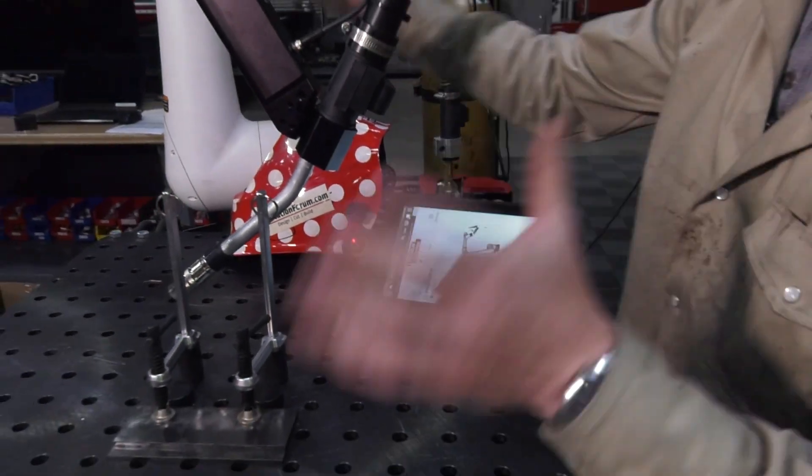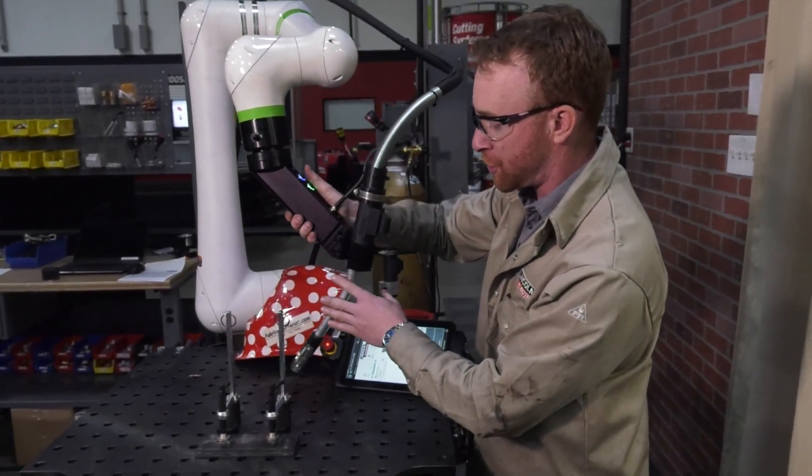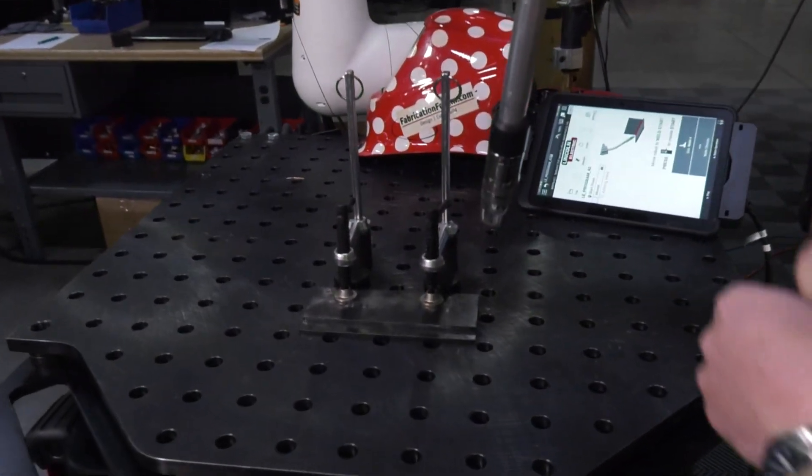You'll notice we do not have to program any air moves. When we press this blue button, we'll just move the torch over the tooling.